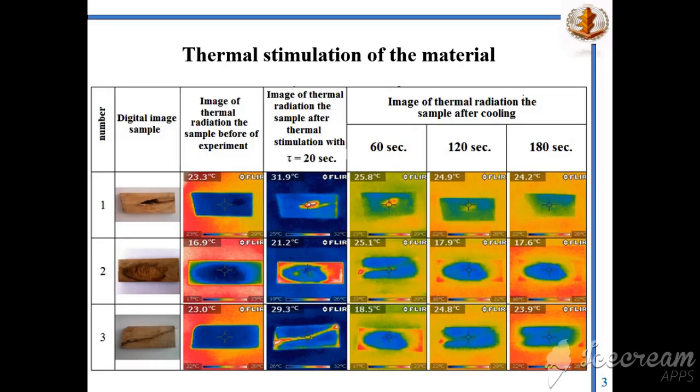Therefore, it is relevant to carry out studies to find and identify the main variety-forming wood defects in oak lumber of initial moisture with thermal non-destructive methods of control as one of the cheaper ones.